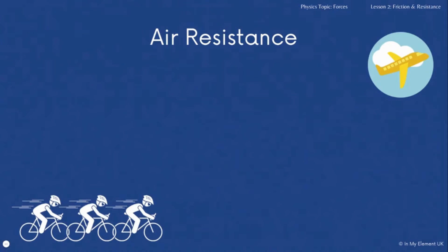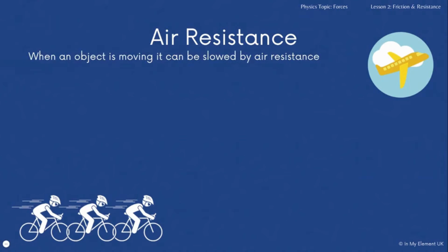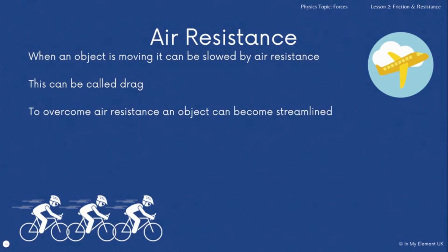Along with friction, we need to look at air resistance, which is another factor that can slow an object down. It usually happens when the object is moving, and it can also be known as drag.